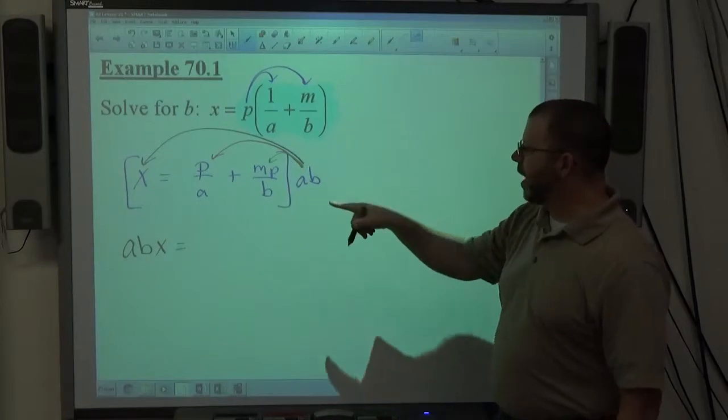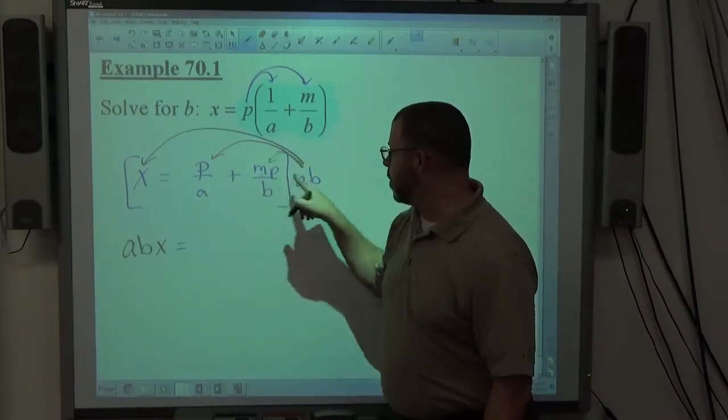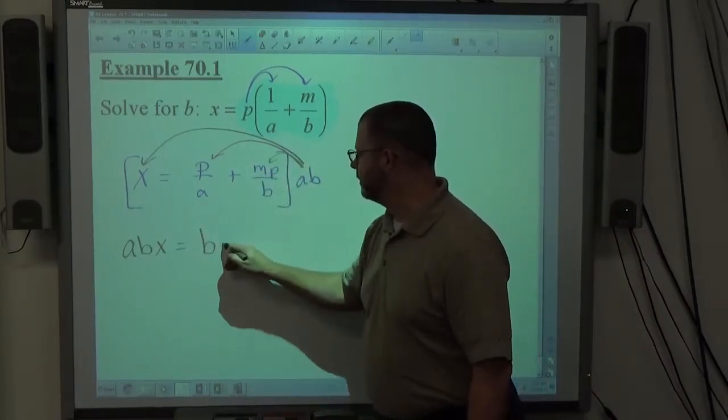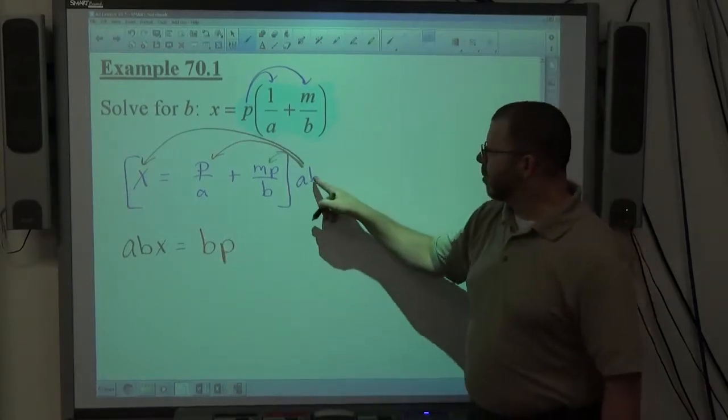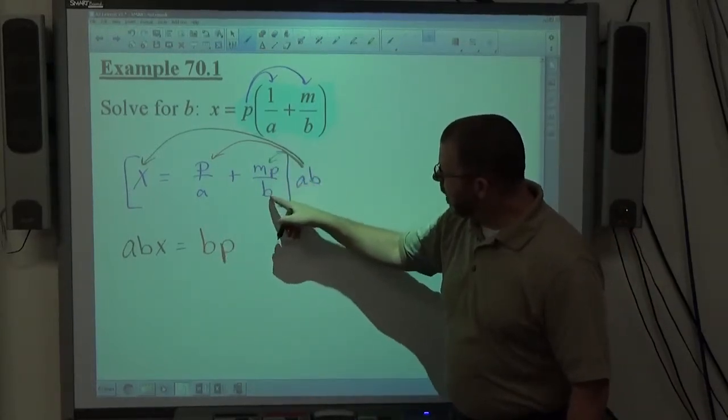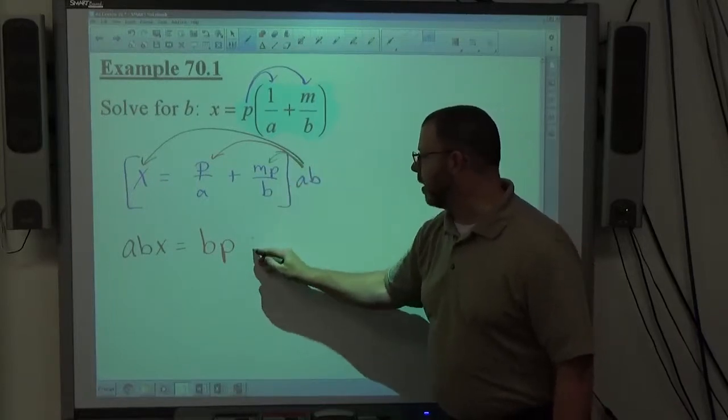When we do P over A times AB, the A cancels the A, leaving me with BP. And when I do AB times MP over B, the B's cancel, so I'm going to get plus AMP.